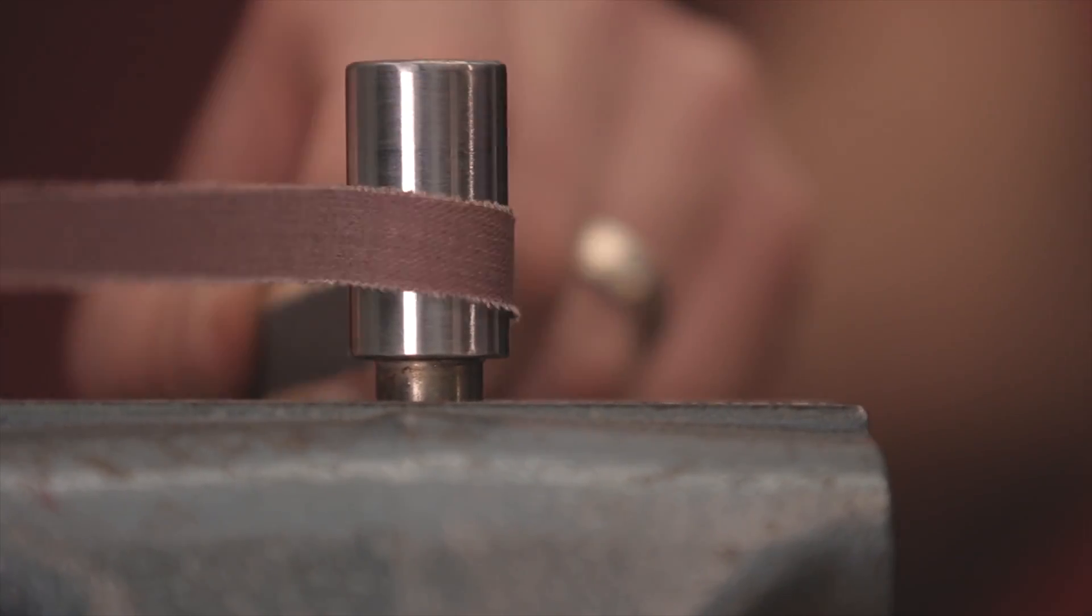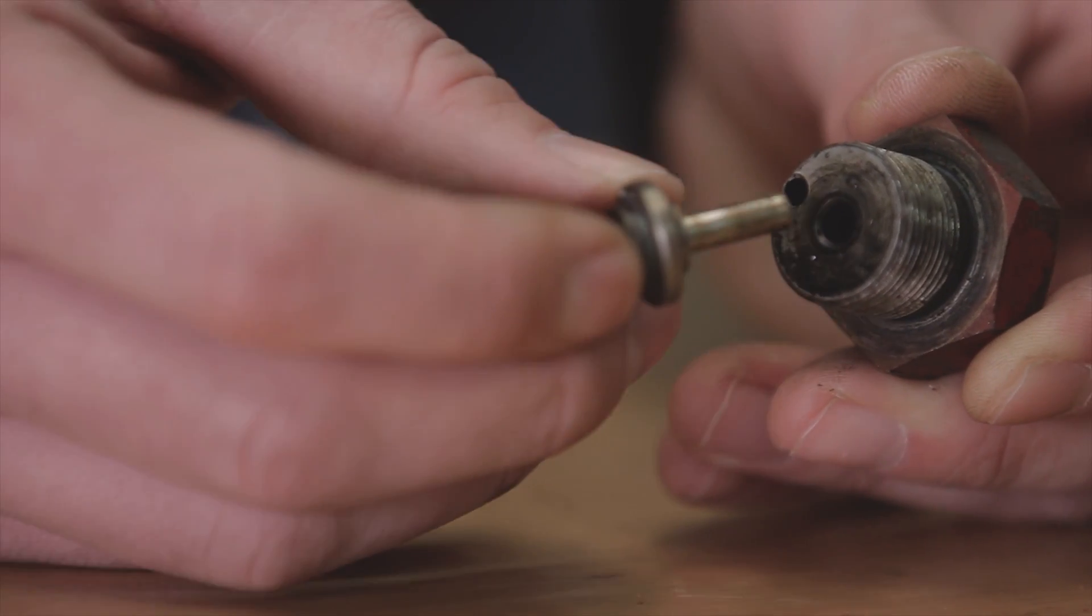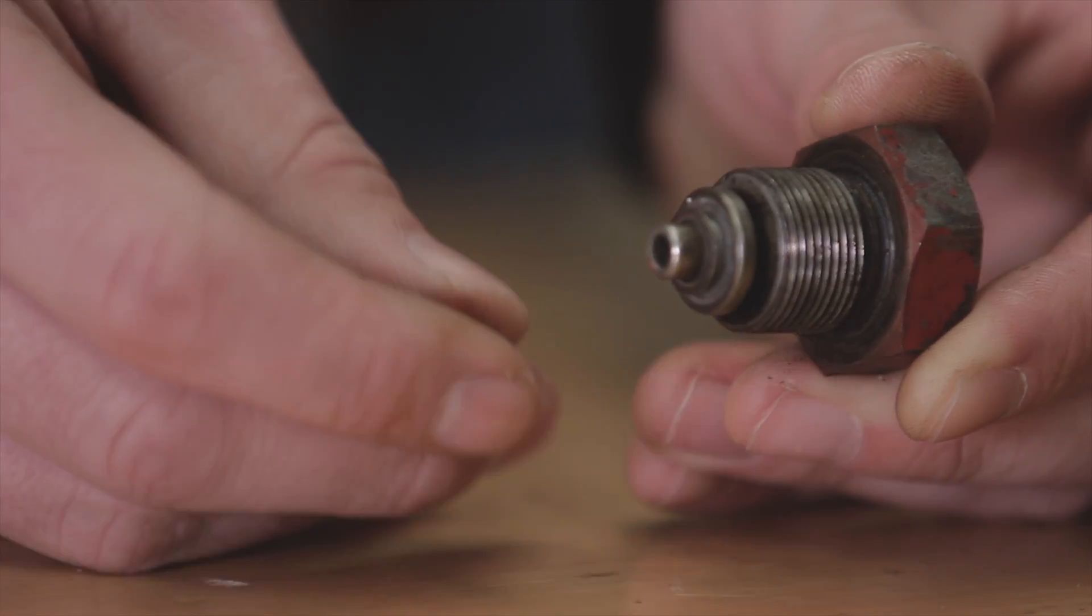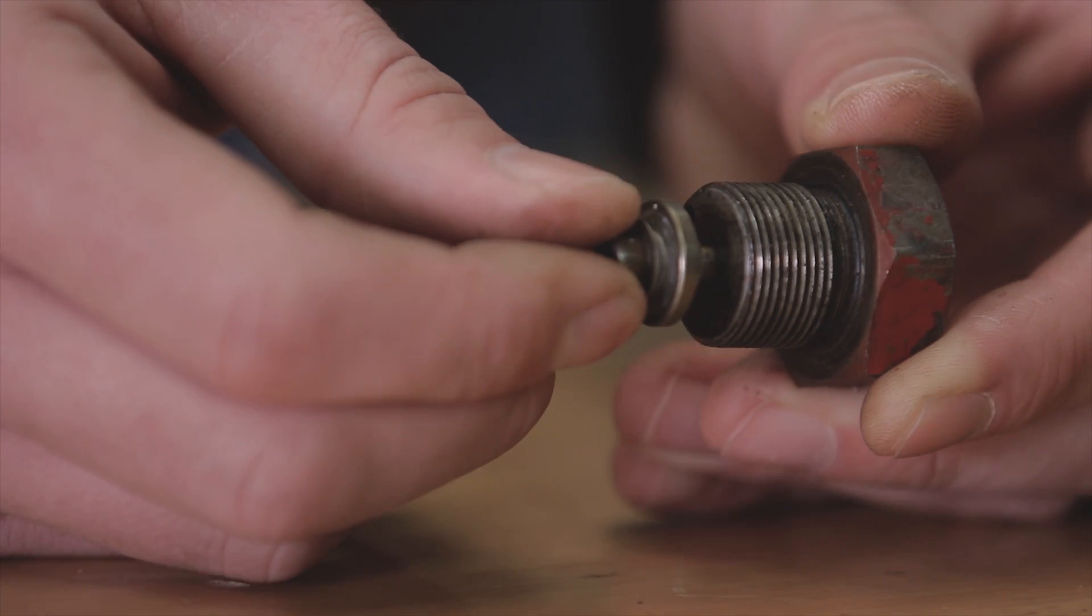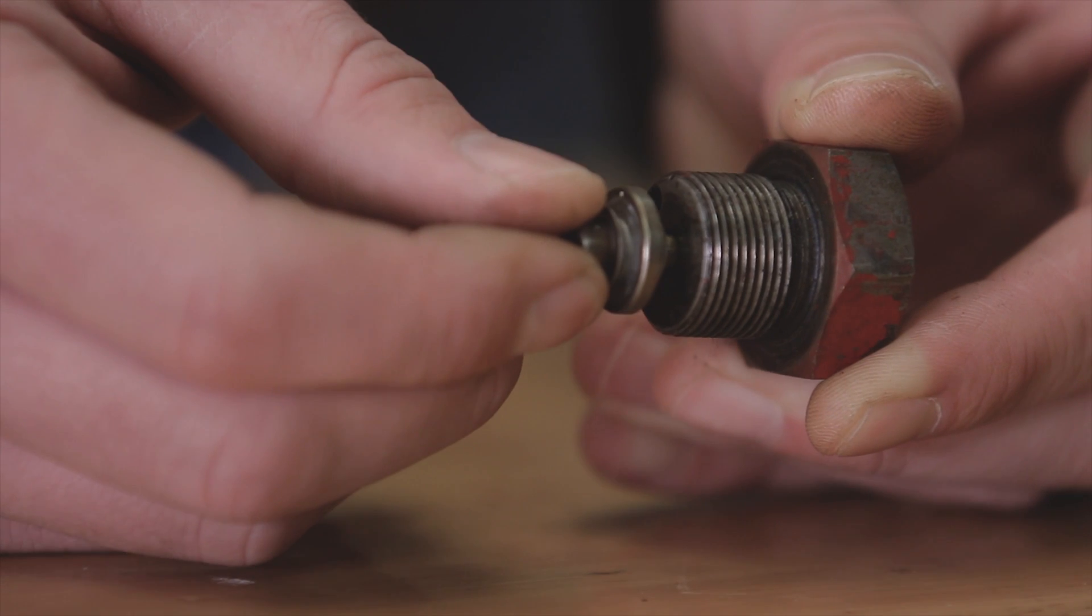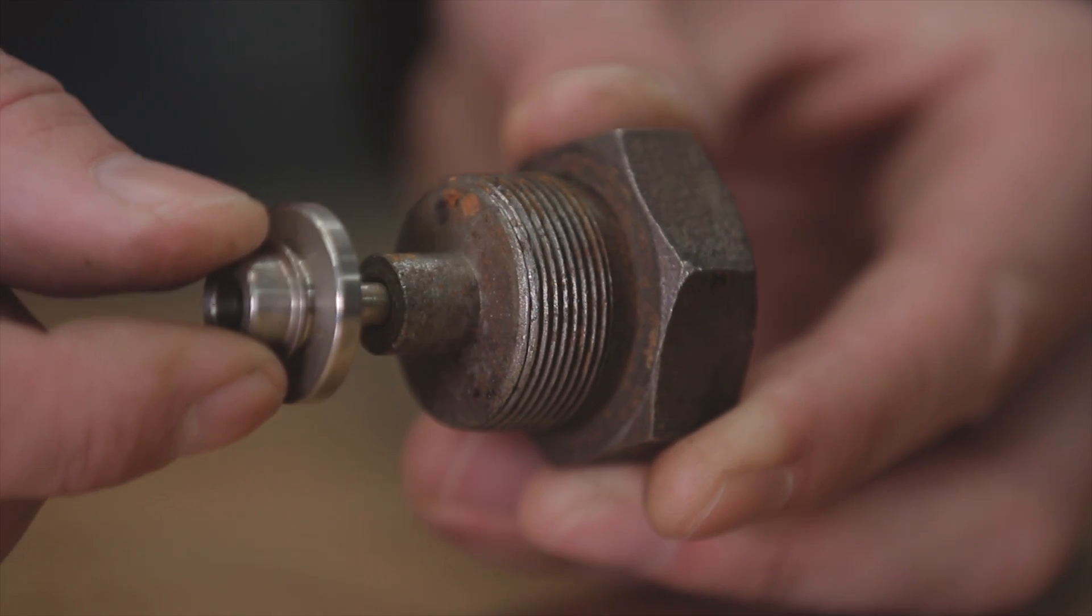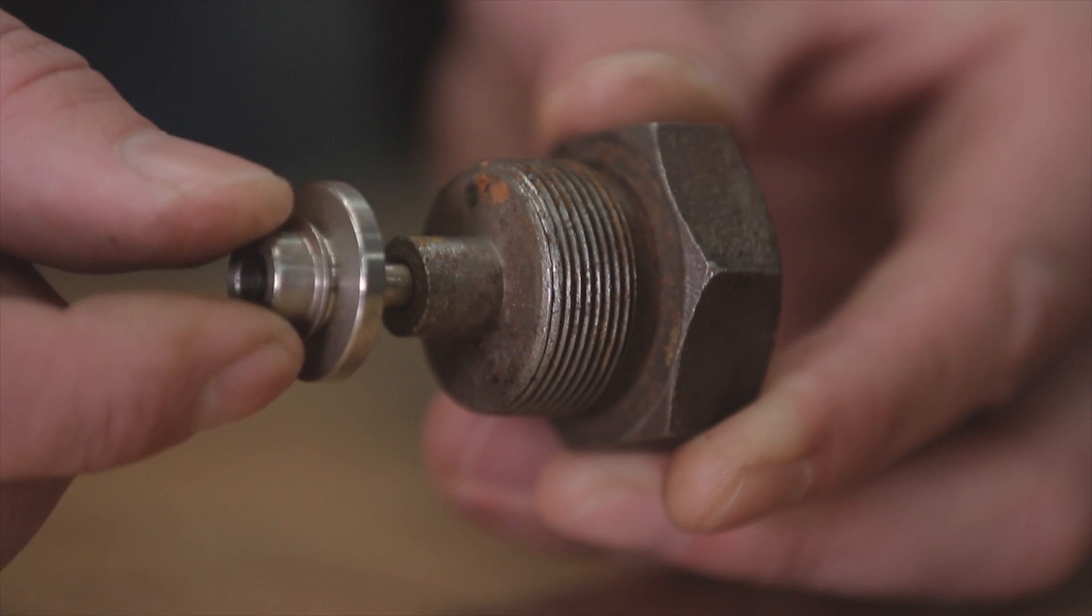Next, you can inspect your check valve caps. They will need to be replaced if the clearance between the cap and the check valve is too much. Take a check valve and slide it into the cap and check for side-to-side play, and make sure that the check valve goes in and out freely. This is an acceptable amount of play. This amount of play shows you that the check valve cap needs to be replaced.